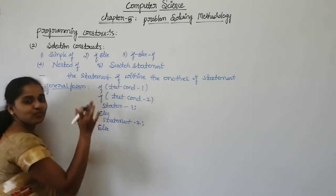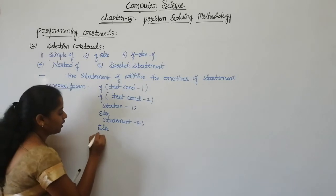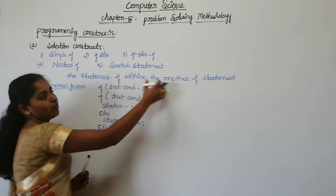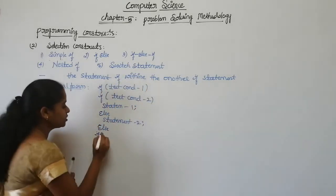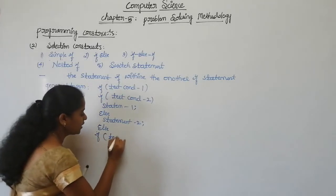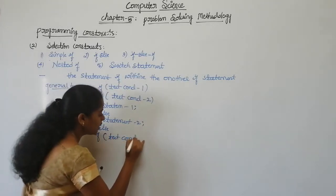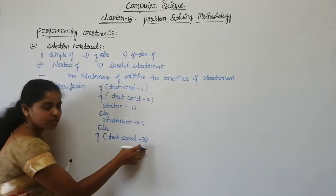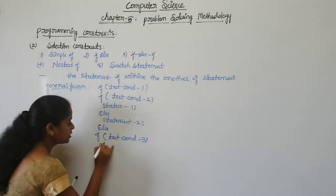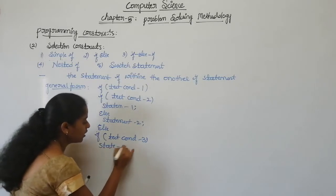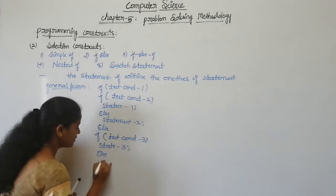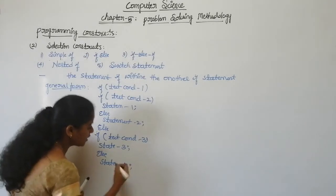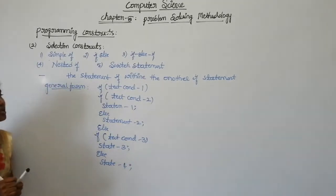If the test condition one is false, then another if statement comes in with another condition — that is test condition three is tested. If test condition three is true, statement three is executed; if it is false, statement four is executed. So this is the general form.